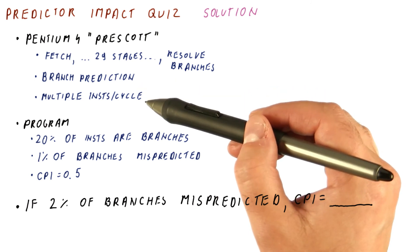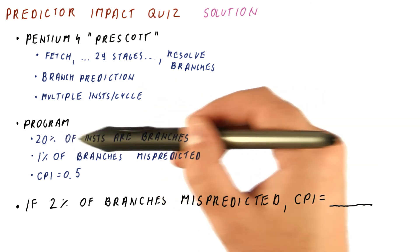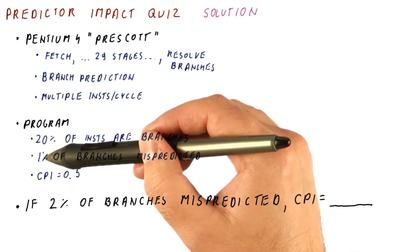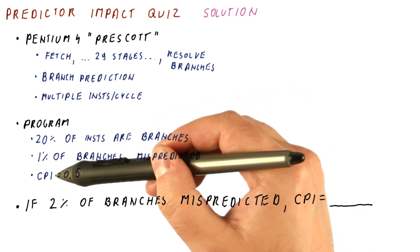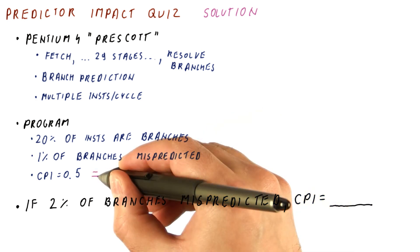Uses branch prediction and multiple instructions per cycle. In a program where 20% of instructions are branches and 1% of branches are mispredicted, it gets a CPI of 0.5 overall.